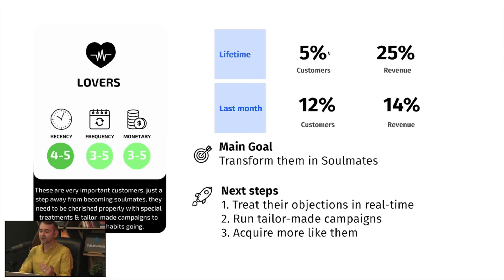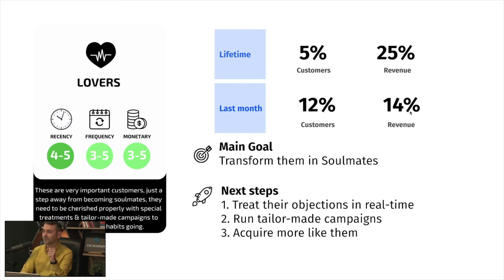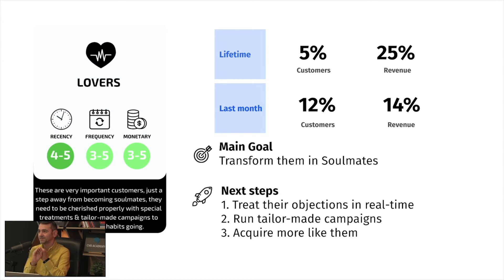Lovers make up around 5% of total lifetime customers and generate 25% of revenue — and in the last month they could be 12% of customers with 14% of revenue. The main goal is to transform them into Soulmates. Next steps: treat their objections in real time, nurture them properly, run tailor-made campaigns, and acquire more customers like them.